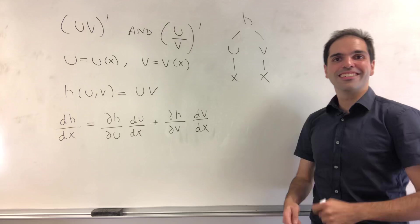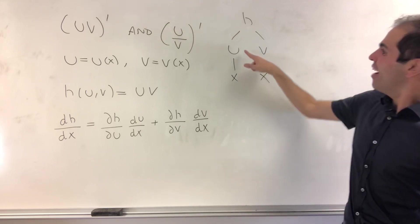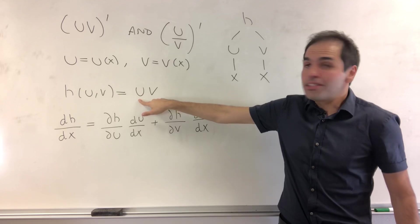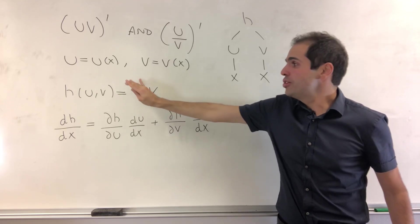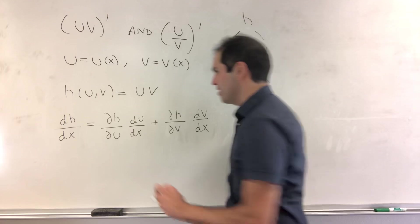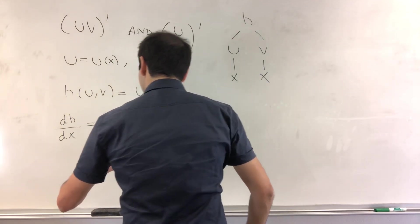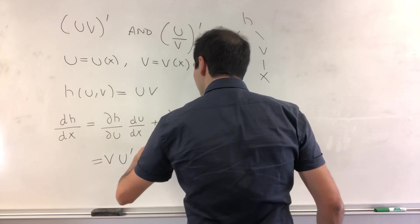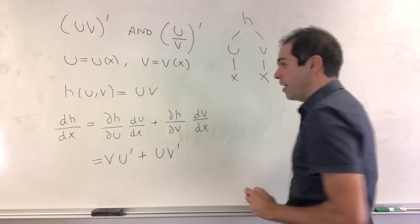By the way, dvd. Now what is dh over du? Well, the derivative with respect to u here is just v. So we get v times du over dx, which is u prime, plus u times v prime.